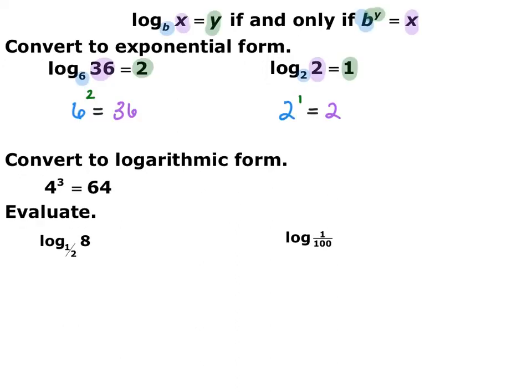When switching from logarithmic to exponential form, your base stays the same. Whatever the base of your logarithm is becomes the base of your exponent. Then your input and output switch: whatever was an output becomes your exponent, and whatever was inside the logarithm becomes your answer. For the first one, log base 6 of 36 equals 2 is the same thing as 6 squared equals 36.